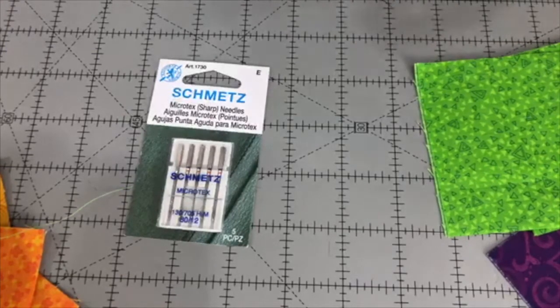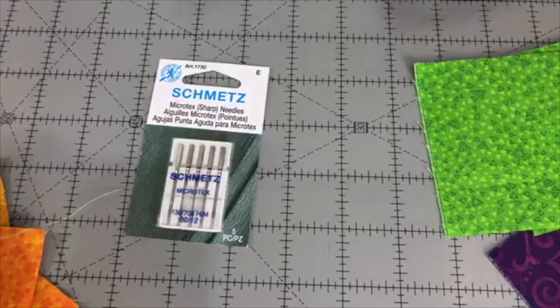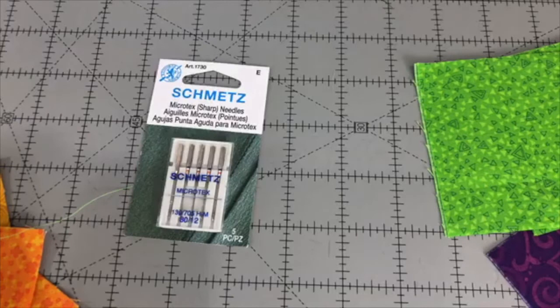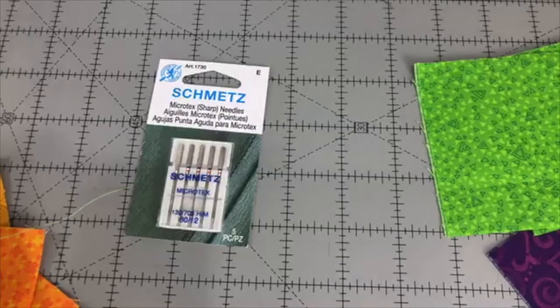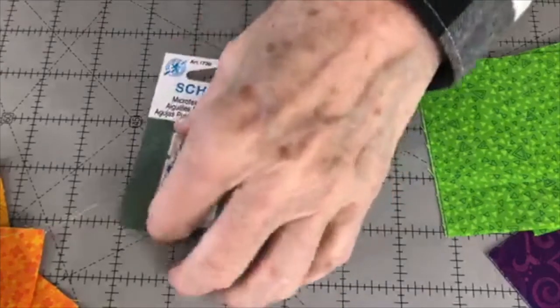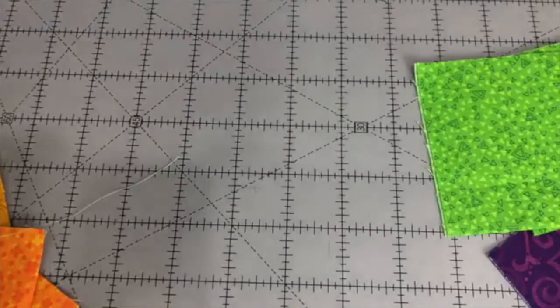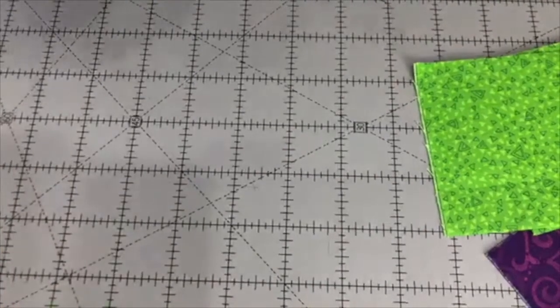And that leads me to tip number one. And tip number one is set up your machine, change your needle, and it will lead you into tip number two, which is once you're all set up, test your seam. So how do I test my seam? Well, I'm going to show you what I like to do.